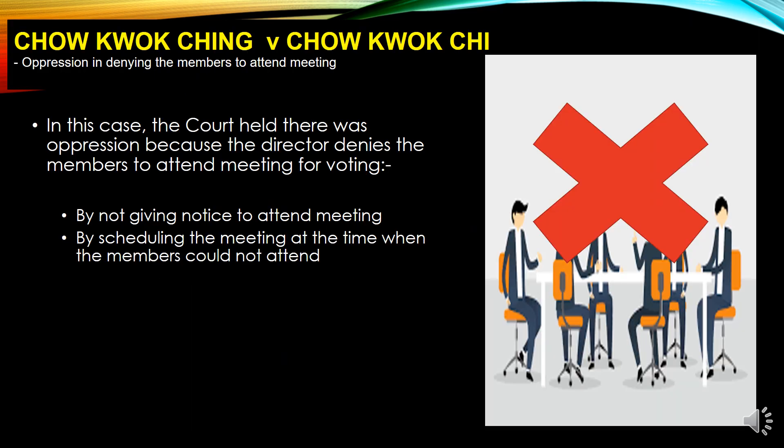In Chow Wo Ching v Chow Wo Chi — oppression in denying members to attend meeting. If directors deny members their right to attend a meeting or deny members their right to vote, this is oppression against the members. The court held that there was oppression because the directors denied the members the right to attend the meeting for voting. How? By not giving them notice to attend, or by purposely scheduling the meeting at a time when the members cannot come.